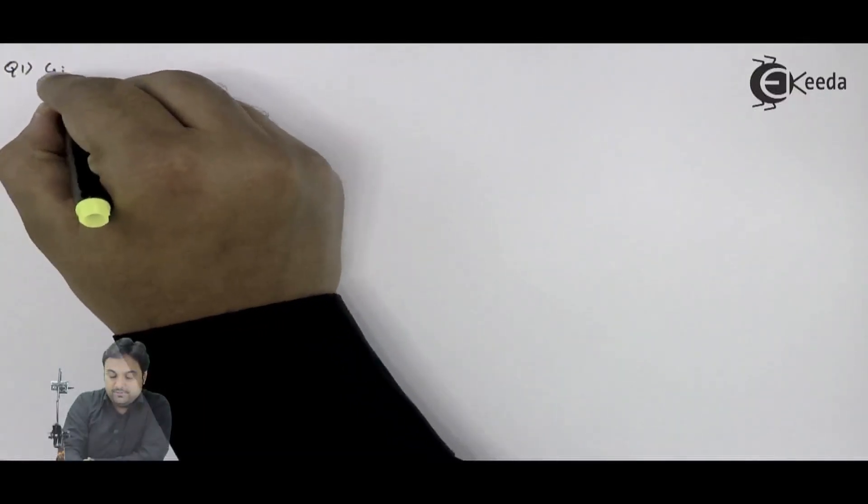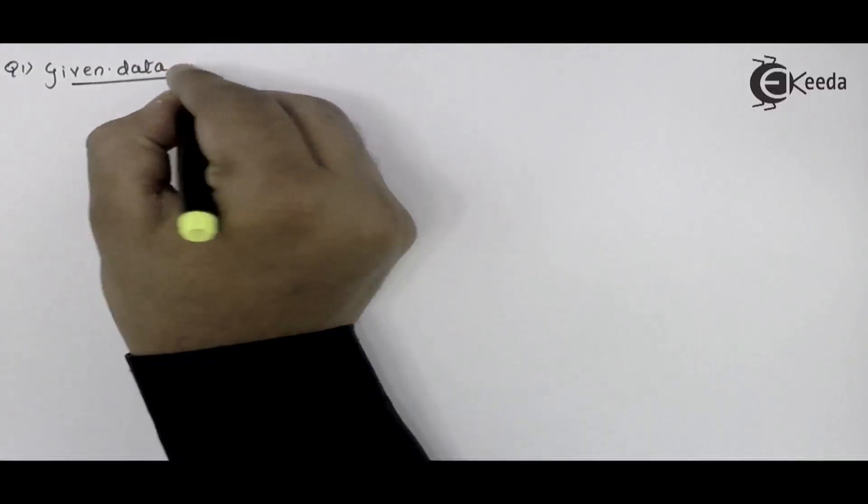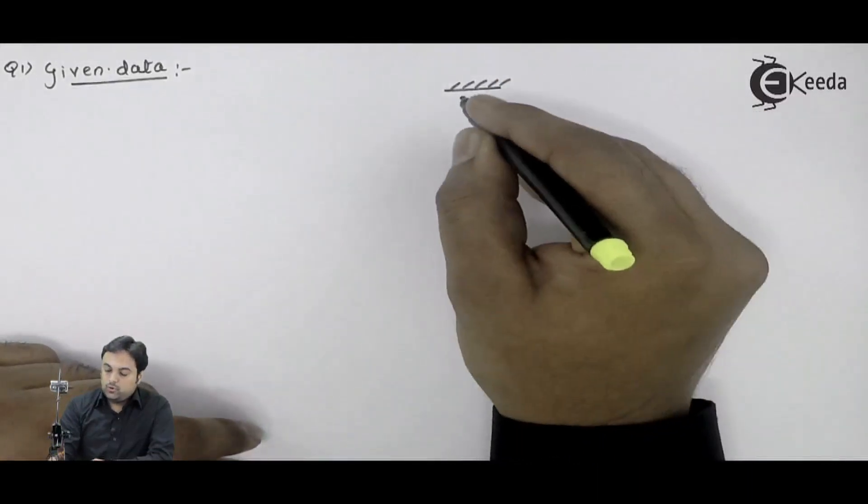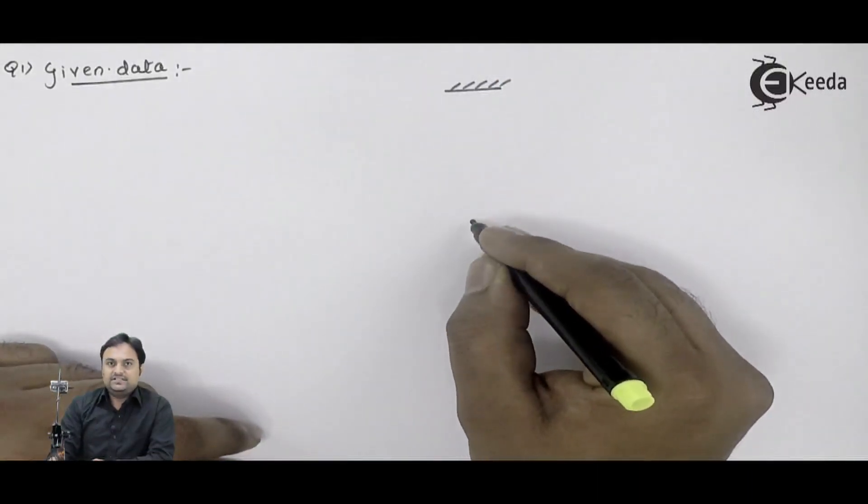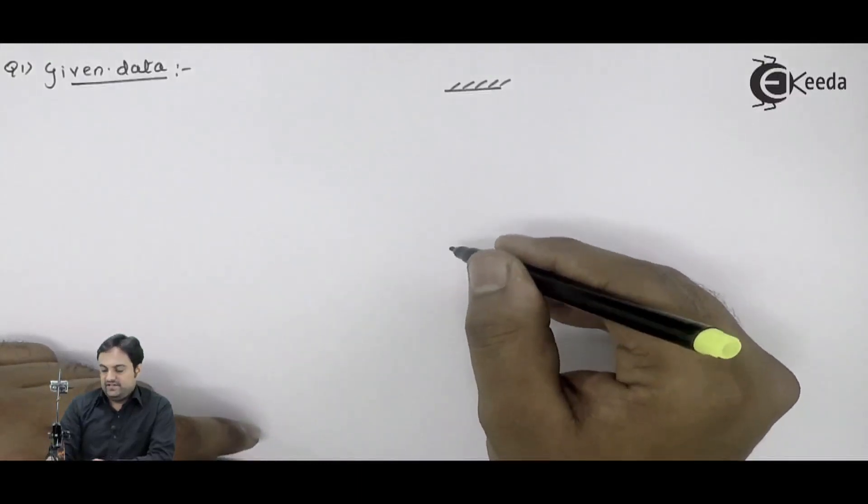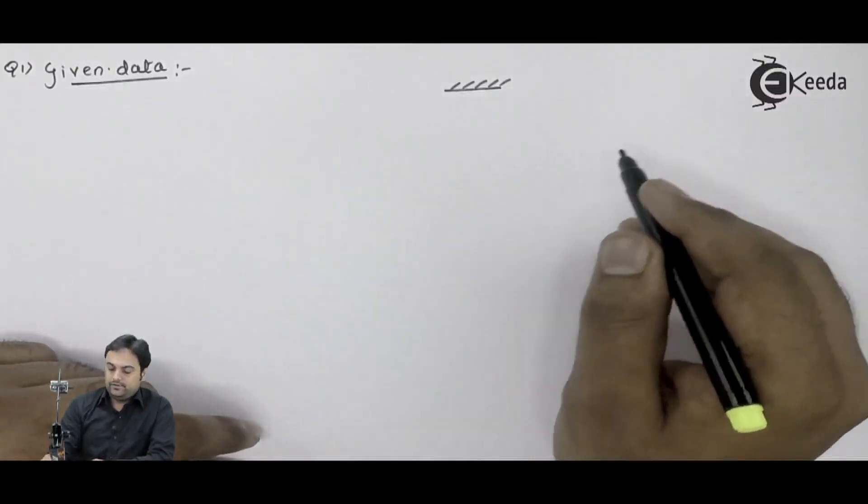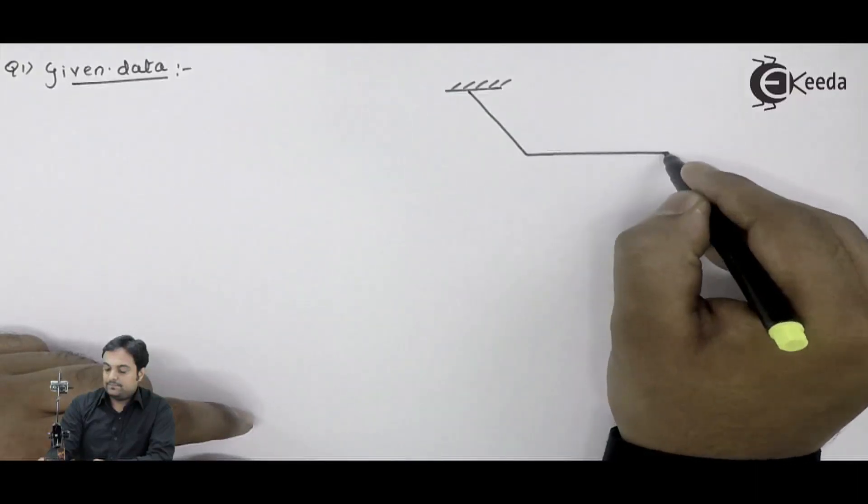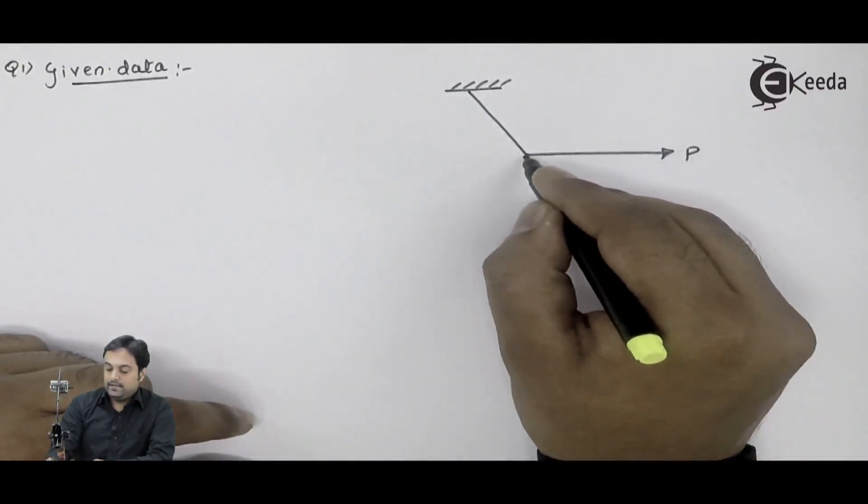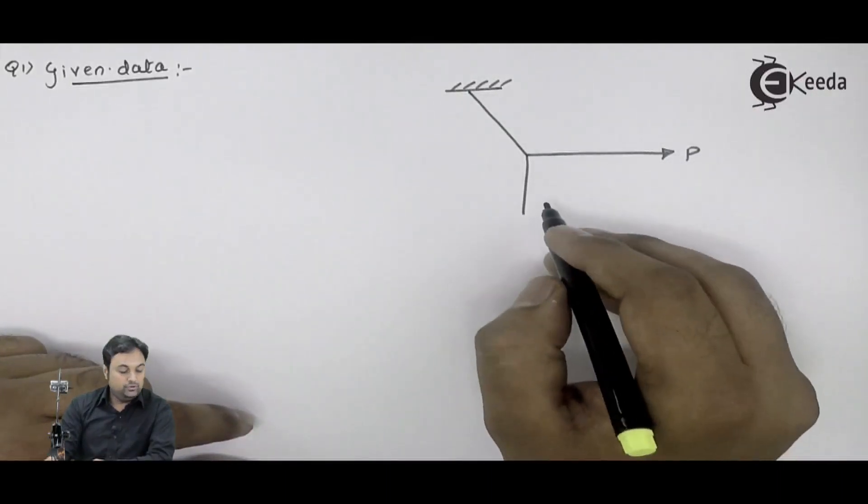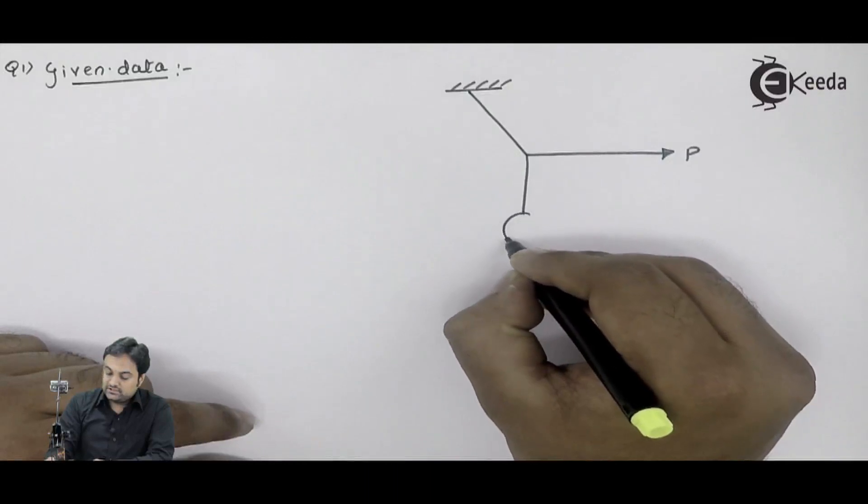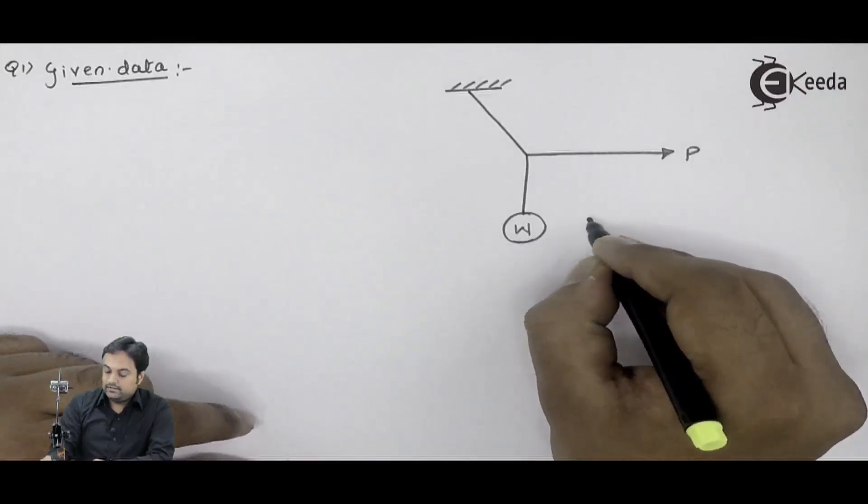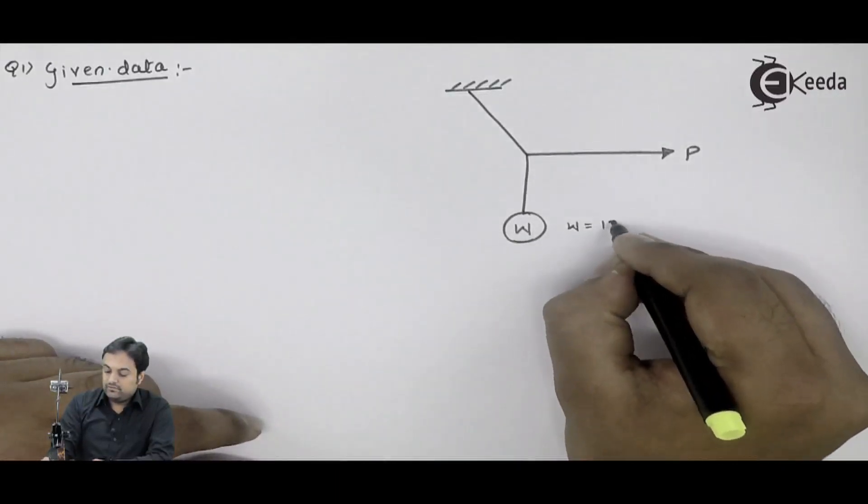Question number 1 on equilibrium. They had given that we have a ceiling here. Over that ceiling, we are having a string which is attached. Then in the second case, they have said this string is pulled. So if I can give you the diagram, it is like this. The string is pulled, and at the end of a string we have a load or a ball attached whose weight is 150 Newton. I can say that this is the W, and that W is equal to 150 Newton.